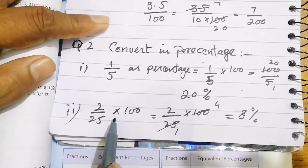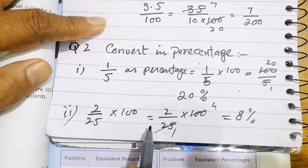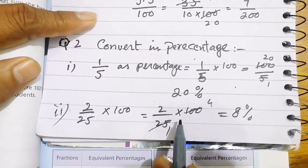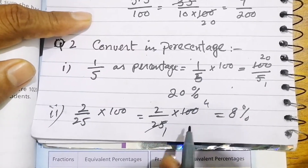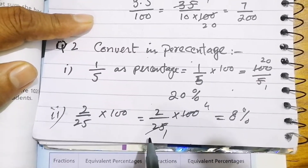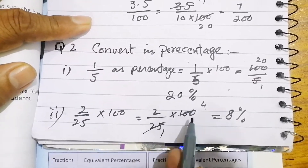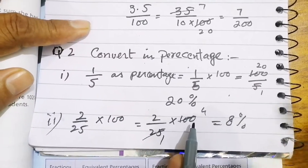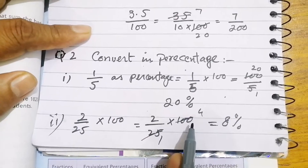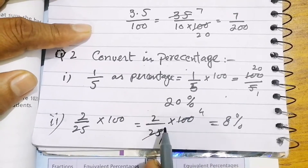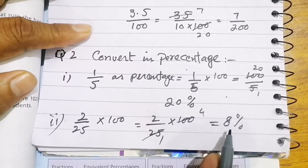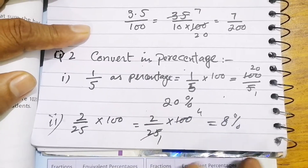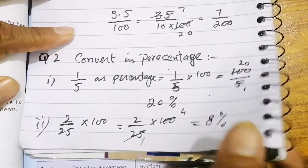2 over 25 multiplied by 100: 25 goes into 100 four times, so 2 multiplied by 4 gives 8 percent.